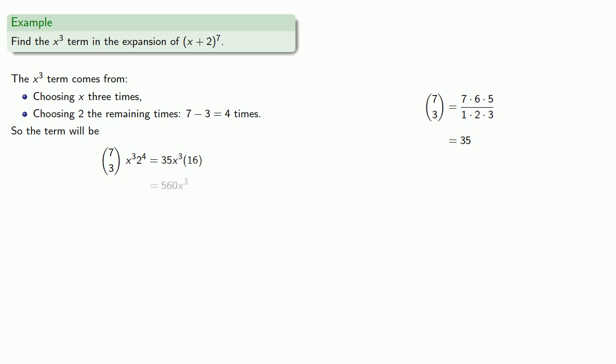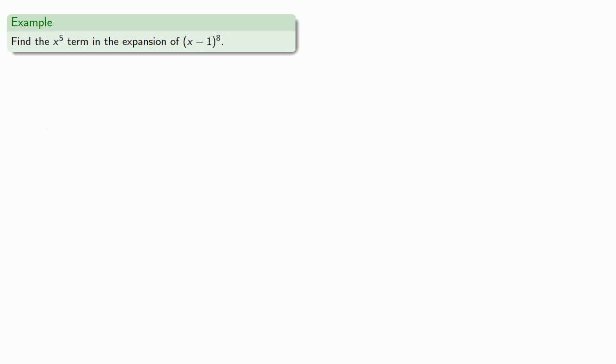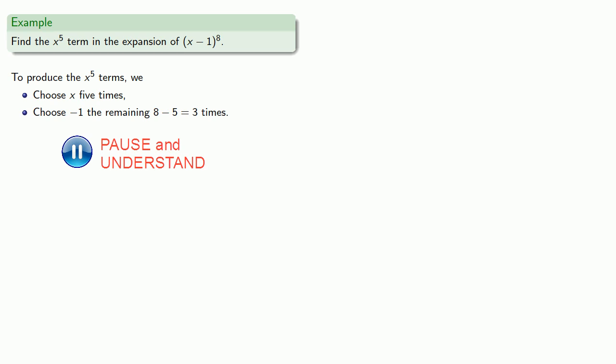Or let's find the x to the fifth term in the expansion of x minus 1 to the eighth. So again, if we want to produce the x to the fifth term, we have to choose x five times and choose minus 1, the remaining 8 minus 5, three times. And so our term will be 8 choose 5, x to the fifth minus 1 to the third. And we can compute.